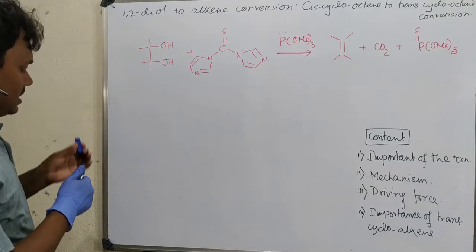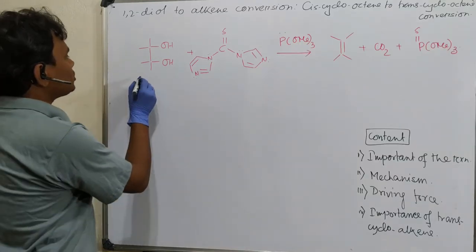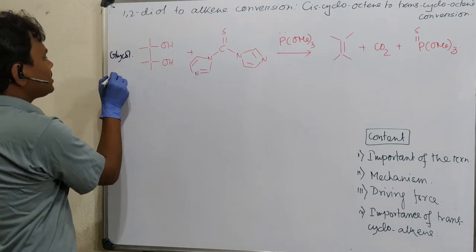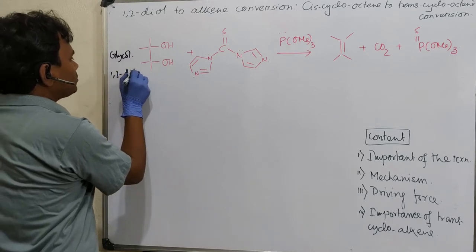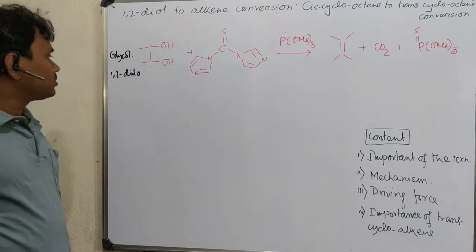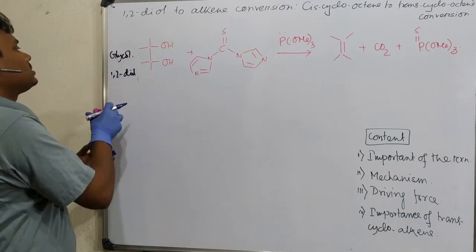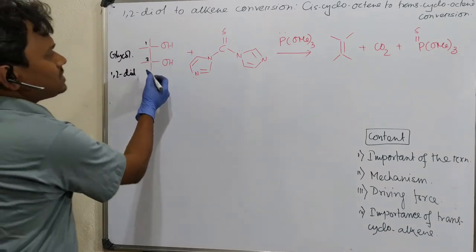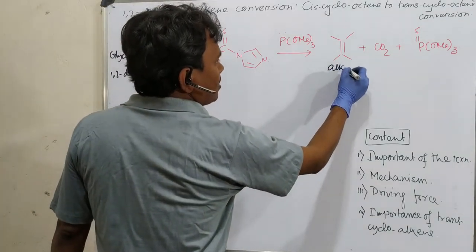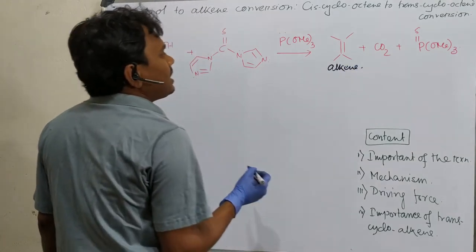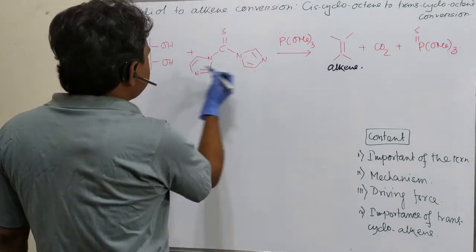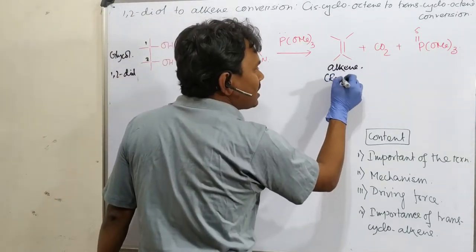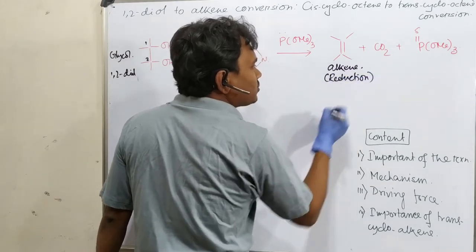Before going to details, I have a small request: if you think my teaching is useful for you, please let my channel grow. So, as you can see, this is a glycol or 1,2-diol. This is position one and this is position two. What happens is this diol is converted into an alkene, and this is actually a reduction.